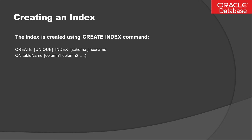Here is the syntax to create an index: you write CREATE, then optionally the UNIQUE keyword, then the index name, ON the table name, followed by the columns on which you want to create the index. The schema name specifies which schema contains the index — the default is the current schema. The index name specifies the name of the index to be created.